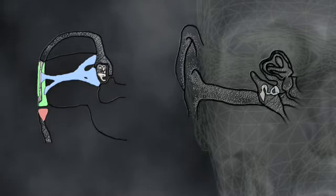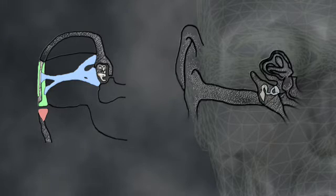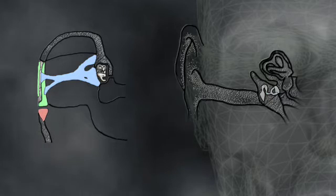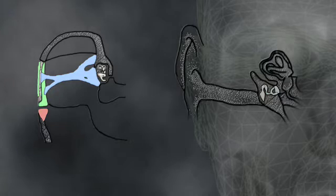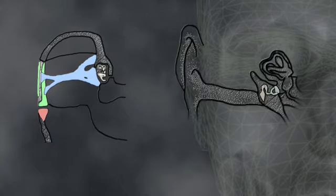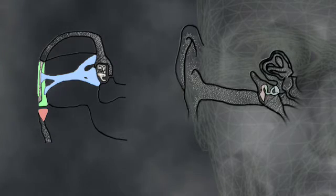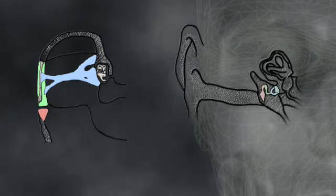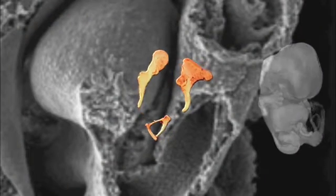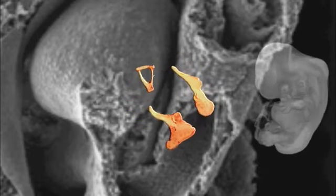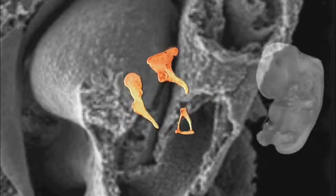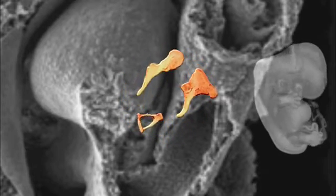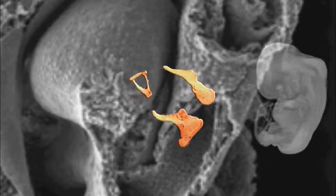It is worthwhile to pause here and examine a type of change that is often mentioned as impossible. It appears that two of the bones in the middle ear of mammals correspond to two bones that are in the jaw structure of reptiles. The green and red bones in these diagrams are the bones in question. And if we look at the developing fetus, sure enough, two developing bones in the reptile head become part of the jaw, while the corresponding bones in the mammal fetus become part of the middle ear.